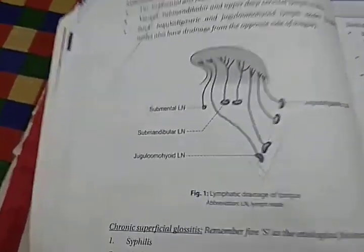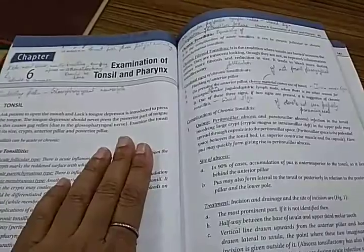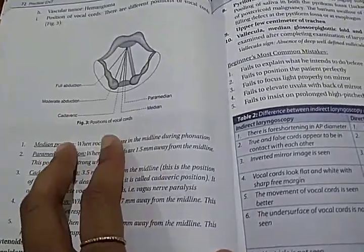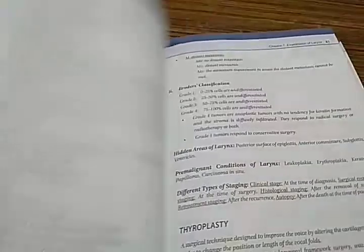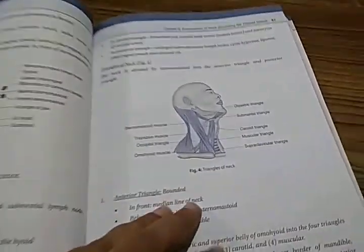Lymphatic drainage of tongue - we reached the oral cavity examination. Examination of tonsil and pharynx. Chronic tonsillitis. Vocal fold, positions of vocal cord. Thyroplasty. Triangles of the neck - we have reached the examination of neck, excluding the thyroid gland.